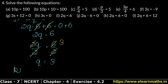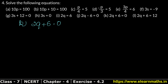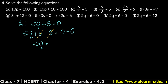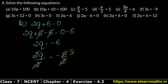Part K is: 2q plus 6 equals 0. Since 6 is positive, we subtract 6 from both sides. Plus 6 minus 6 cancels, and 0 minus 6 gives minus 6, so 2q equals minus 6. We then divide both sides by 2. The 2s cancel, and minus 6 divided by 2 is minus 3. So q equals minus 3 is the answer.